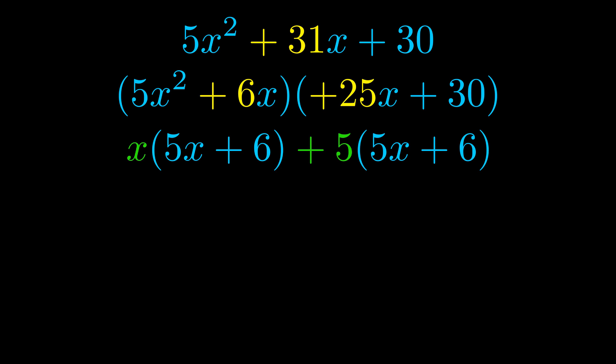Notice also how what remains inside of the parentheses is the same in both cases. The blue values are the same. Those blue values will become one of our factors and we will combine the two green values, the GCFs that we pulled out, to get the other one. And that is our fully factored equation.